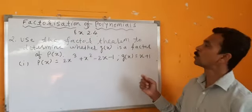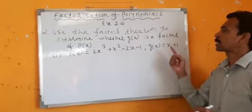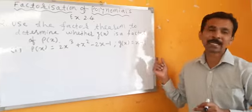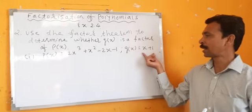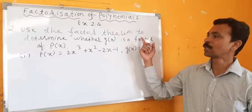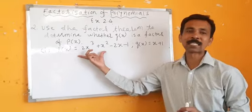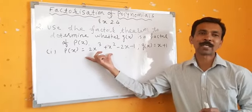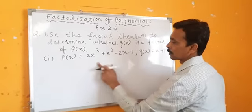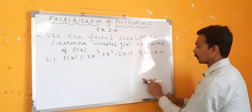Question number 2: Use the factor theorem to determine whether g of x is a factor of p of x. The method is the same — I will place the value of x in p of x. If the remainder is 0, then only we can say g of x is a factor. Here g of x is the divisor and p of x is the dividend.